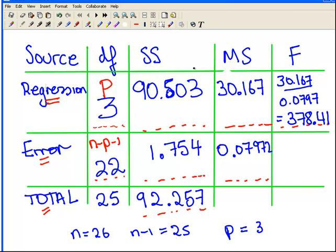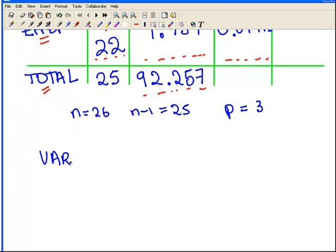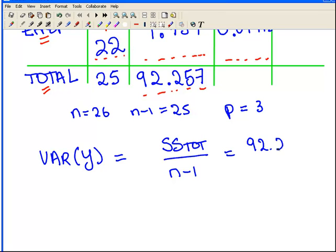Now, there's a couple of questions I could ask other than that. For example, what is the variance of the response variable? How did you work that out? SS total divided by n minus 1. So if I multiply, it is 92.257 divided by 25. Remember this is n minus 1 over here. With a little bit of calculator work, I get 3.69. That's one potential question you can get asked.